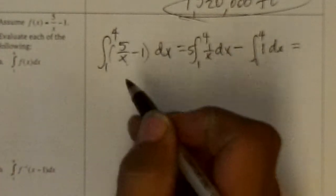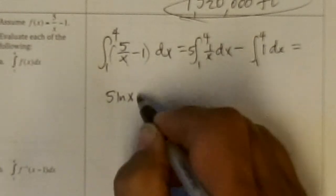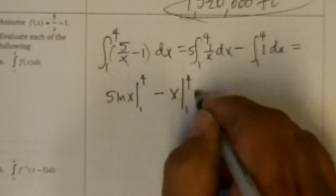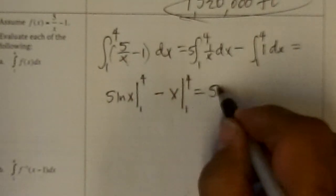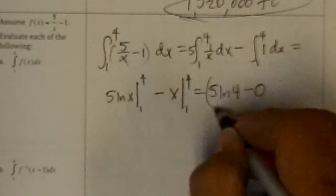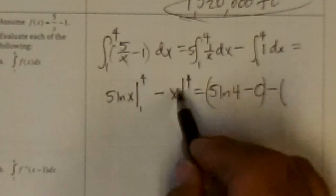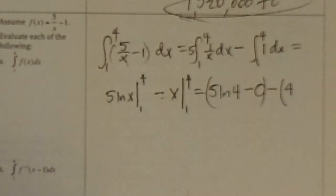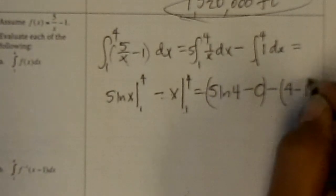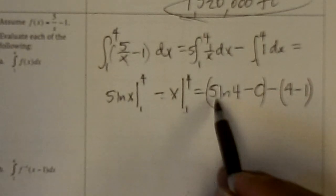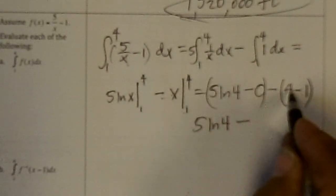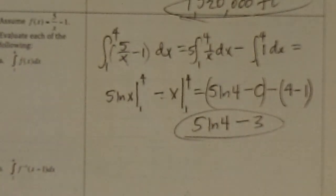So, the integral of 1 over x is ln x, so I'm going to have 5 ln x evaluated from 1 to 4 minus the integral of 1 is just x evaluated from 1 to 4. 4 into here is 5 ln 4 minus 5 ln 1, ln 1 is 0, so minus 0. All that minus 4 in here is 4, minus, and then 1 in there is 1, and I got to subtract all of that. So, I have 5 ln 4 minus, 4 minus 1 is 3, minus 3.